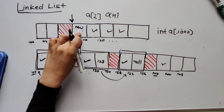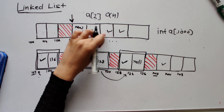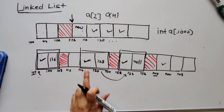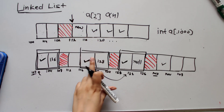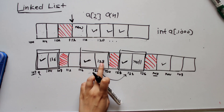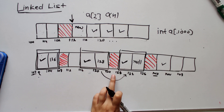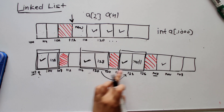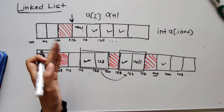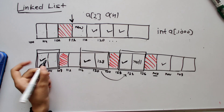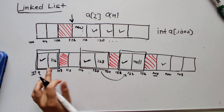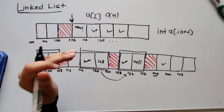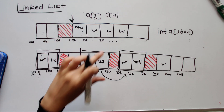Similarly for deletion: if I want to delete the first element of an array, I have to shift all other elements left — that's O(n). In a linked list, to delete a node I simply update the previous node's pointer to skip over it and point to the next node — for example, storing 128 instead of the deleted node's address — then set the deleted node to null so it's free. Insertion and deletion are easier in linked lists; element access is easier in arrays.